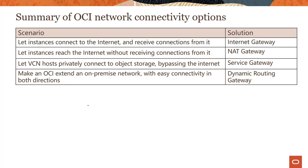Let's quickly summarize all the network connectivity options covered in this module. First, to let instances connect to the internet bidirectionally, use internet gateway. If you want instances to reach the internet for things like updates but not receive inbound connections initiated from the internet, use NAT gateway, which performs network address translation. To have your VCN hosts privately connect to OCI public services like object storage while bypassing the internet — with traffic going through Oracle's network backbone — use service gateway. Finally, to connect your VCN to your on-prem environment for private traffic, use dynamic routing gateway.